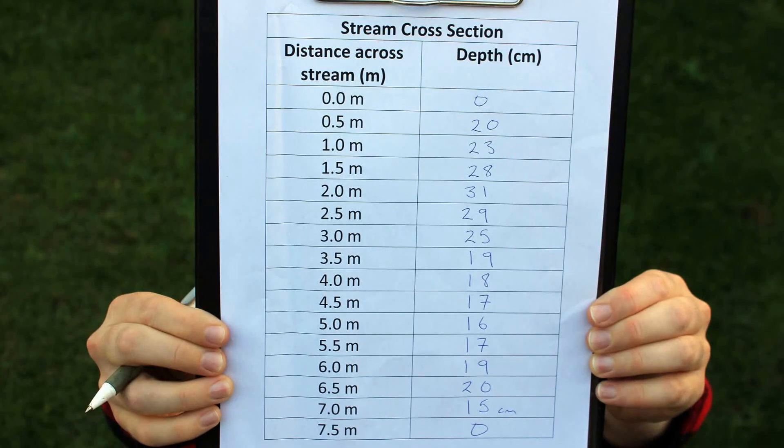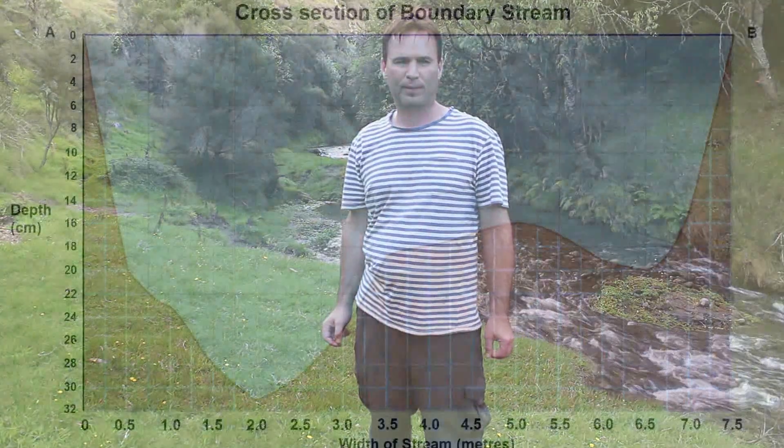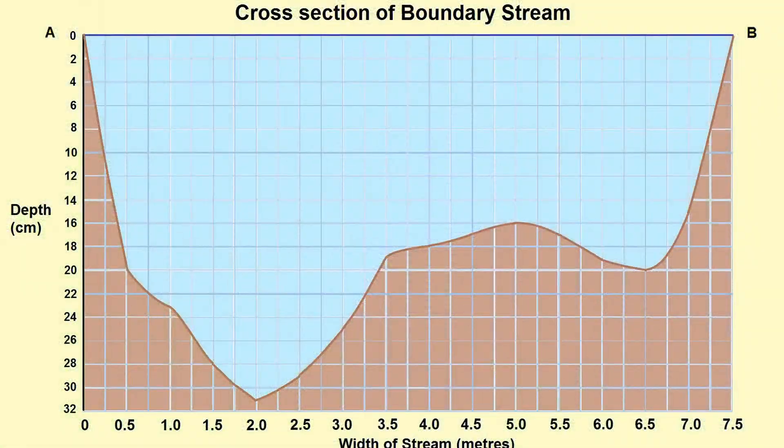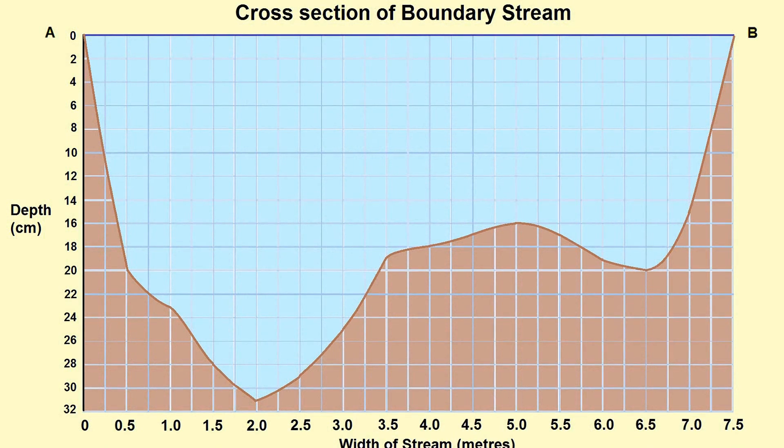Now we have finished taking our data collection, we are ready to turn our data into a cross-section graph. But unlike a normal cross-section graph where zero starts at the bottom, in this case zero is going to start at the top, and we'll take our measurements downwards. For instance, this completed example from today's measurements.